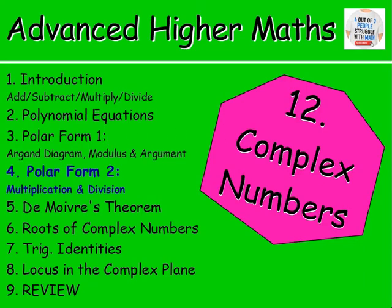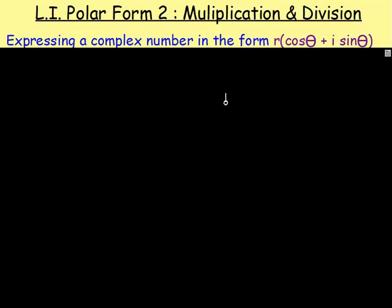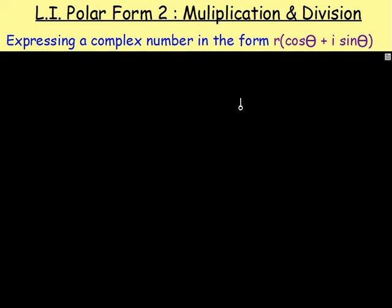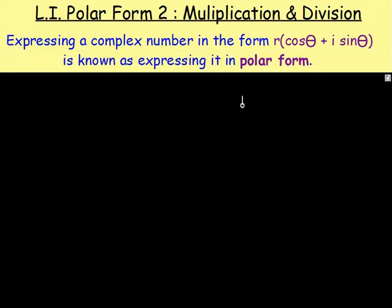So last lesson we were introduced to polar form, and we know that is when we write our complex number A plus Bi — you've got a real part and an imaginary part — we can rewrite that in the form R bracket cos theta plus I sine theta, with R being the modulus and theta being the argument. Look back at that first lesson if you want more detail with that.